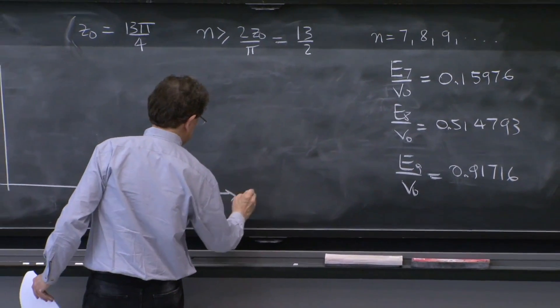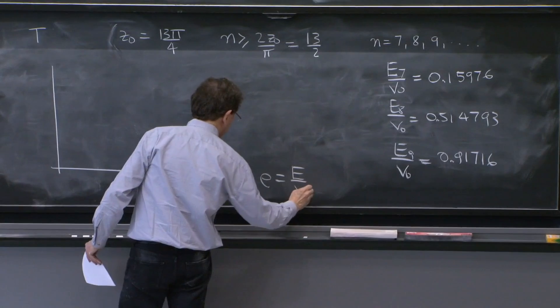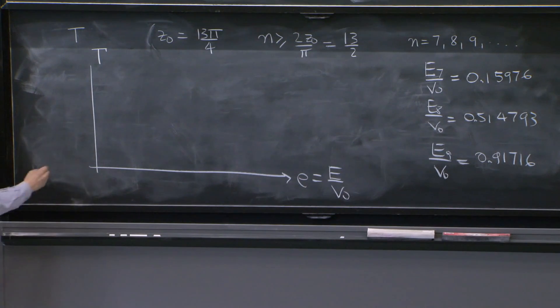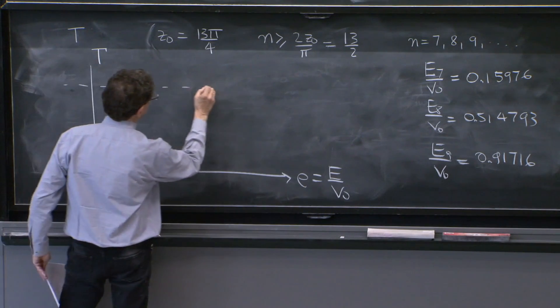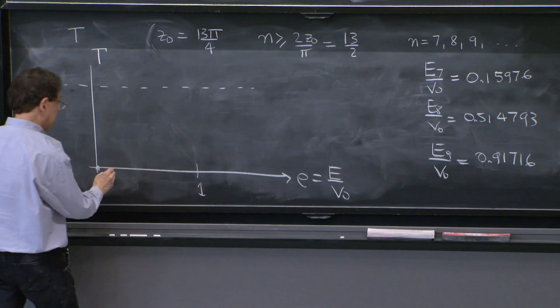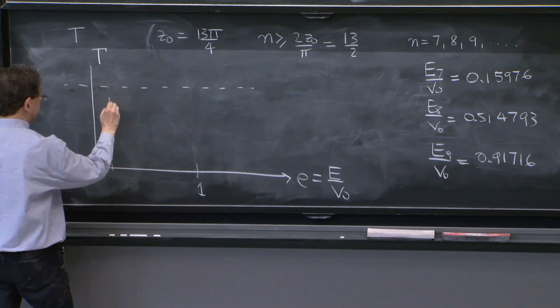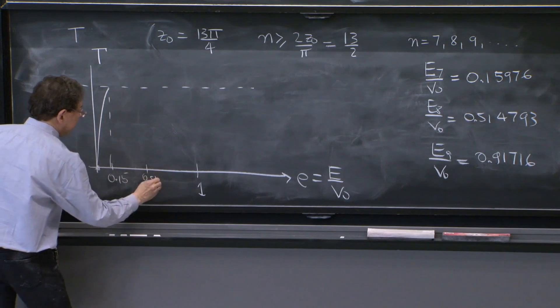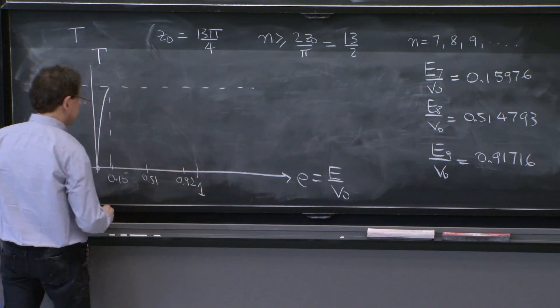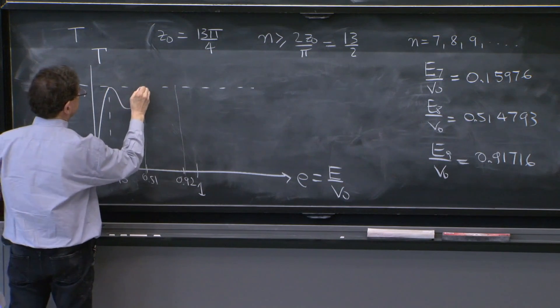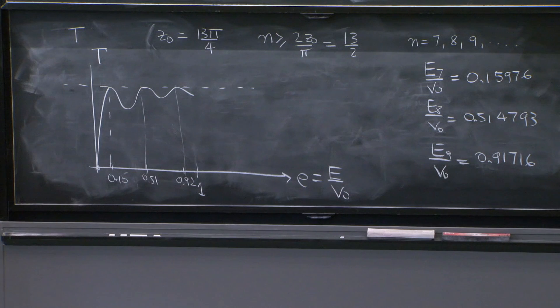So if you plot it, you have here E or capital energy over v0, and you want to plot the transmission probability. And it begins with 0. That was the question a second ago. And then it may reach 1, and it will reach 1 at each one of those values. So if here is 1, 0.15, there will be 0.15, 0.51, and 0.92. So you get this, and here another one, and here another one.